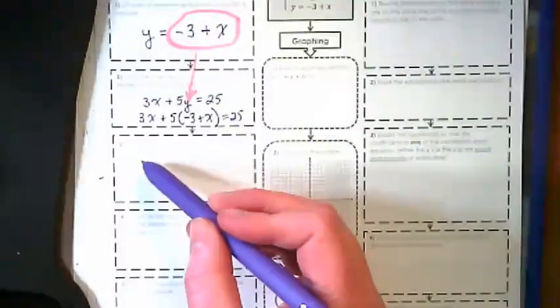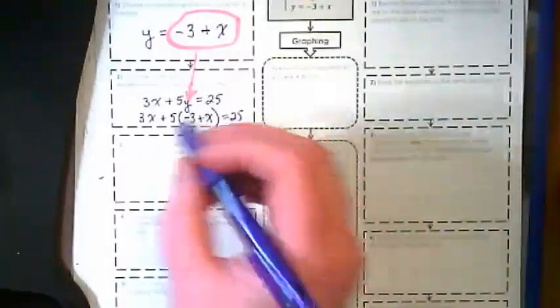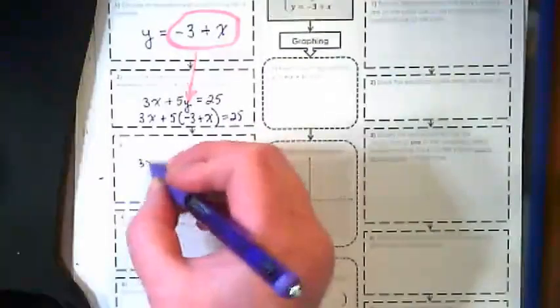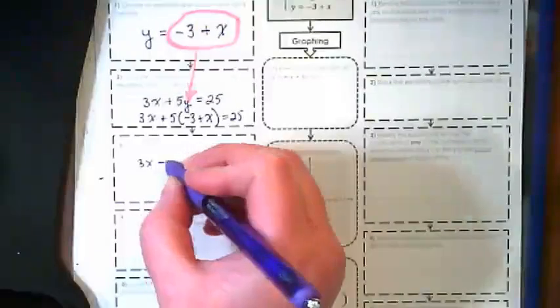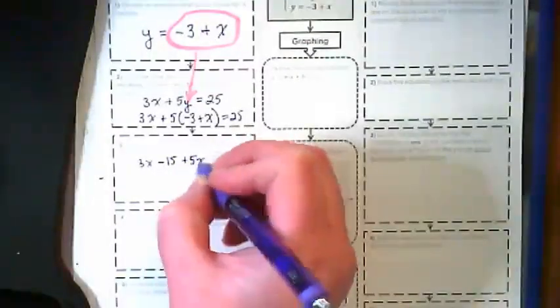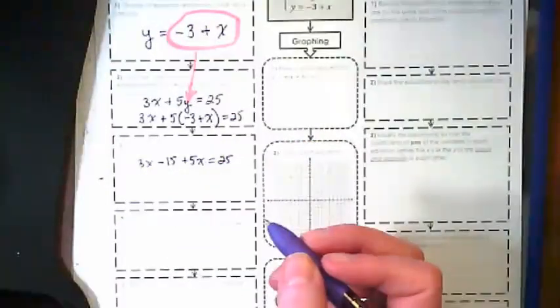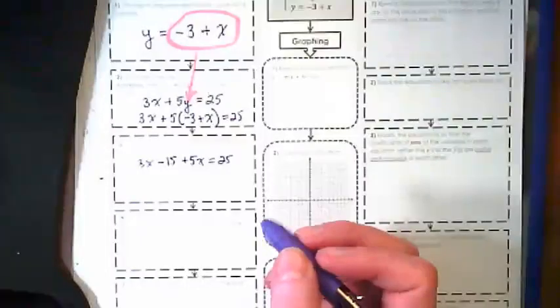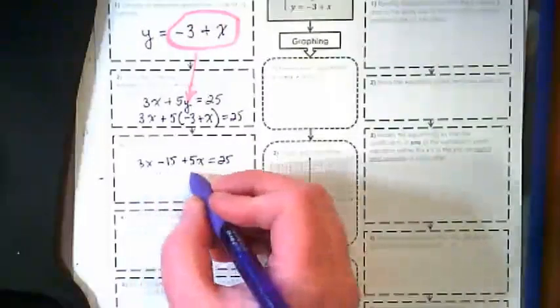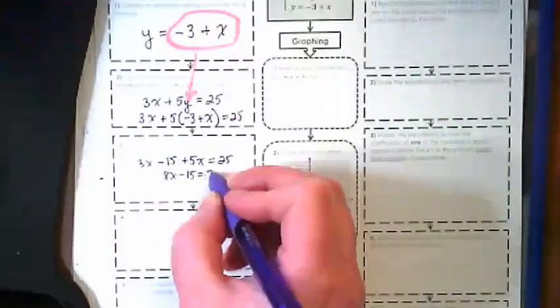Step three says to solve the equation from step two for the variable that was not isolated. So we have 3x minus 15 plus 5x equals 25. We're going to end up being able to solve for x here, 3x and 5x is 8x minus 15 equals 25.